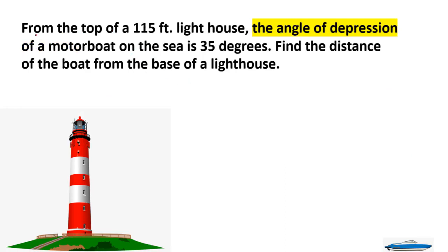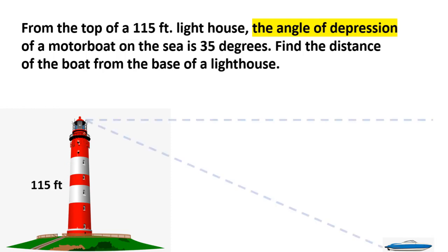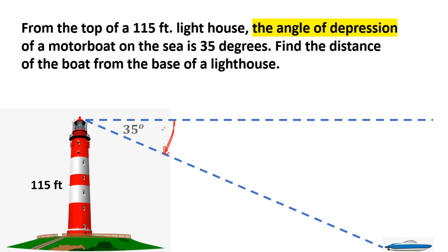Word problem number four: From the top of a 115-foot lighthouse, the angle of depression of a motor boat on the sea is 35 degrees. Find the distance of the boat from the base of the lighthouse. This is how we illustrate the angle of depression once again — from a straight horizontal line going down.